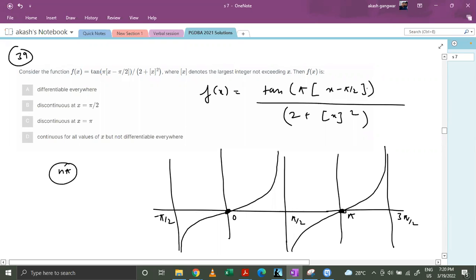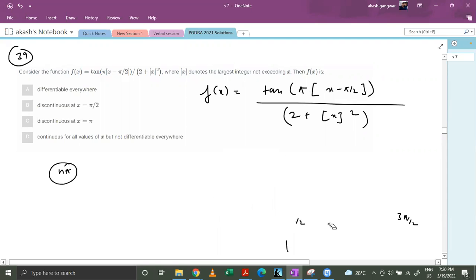Now this function is always an integer. So basically this is nothing but some integers multiplied by pi. It is nothing but 0. So basically the numerator is always 0. This scary looking function is always 0.